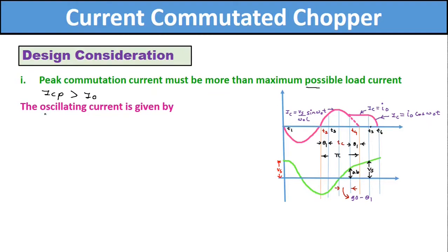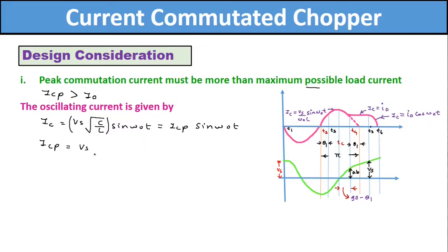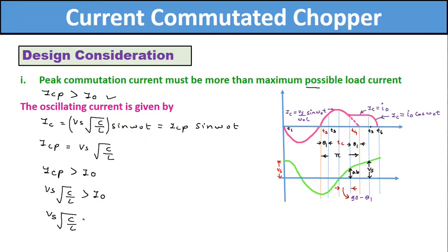The oscillating capacitor current in the commutation circuit is given by IC = Vs × √(C/L) × sin(ω₀t), where Vs is the input DC voltage and ω₀ is the angular frequency. The peak value ICP = Vs × √(C/L). Applying the condition that ICP must be greater than the maximum possible load current I0, we get Vs × √(C/L) > I0. To equalize this equation, we introduce a constant X, so Vs × √(C/L) = X × I0. Let this be equation number 1.